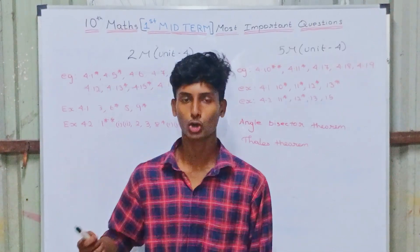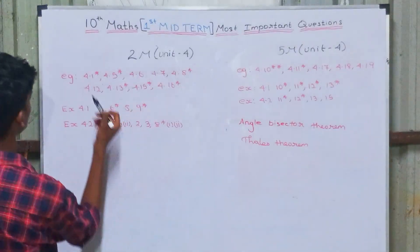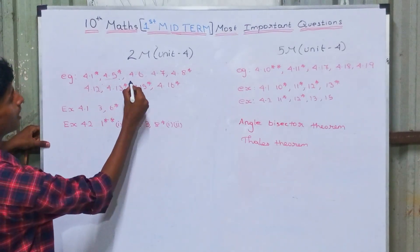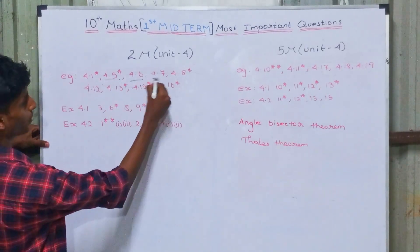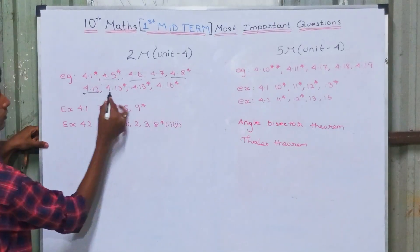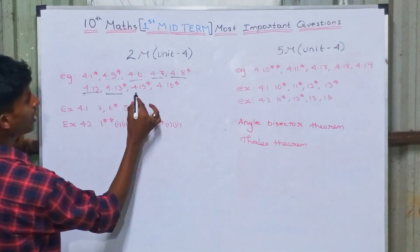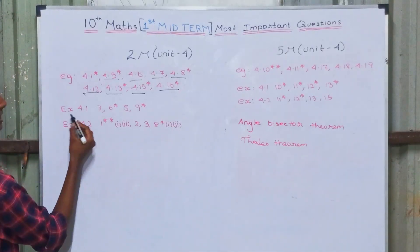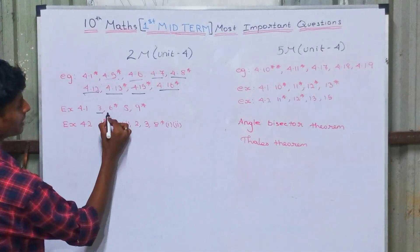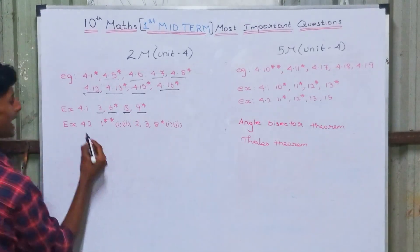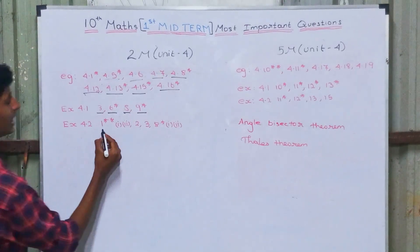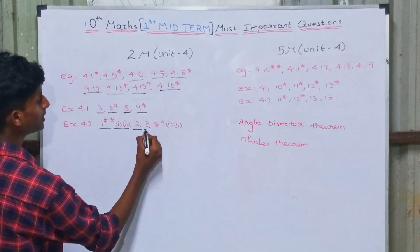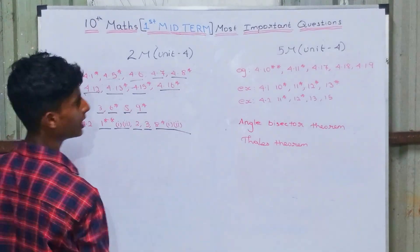Unit 4 important questions. For two marks: Example 4.1 important, 4.5 important, 4.6, 4.7, 4.8, 4.12, 4.13, 4.15 and 4.16 important. Exercise 4.1: 3rd sum, 6th sum, 8th sum and 9th sum. Exercise 4.2: 1st sum — 1st subdivision — 2nd sum, 3rd sum, and 8th sum — 1st subdivision.